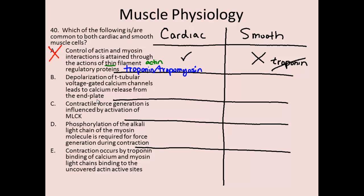Response B states: the depolarization of t-tubular voltage-gated calcium channels leads to calcium release from the end plate. One thing that should automatically stand out is that this is not true of smooth muscle because smooth muscle does not have t-tubules. They have caveolae, which are similar to t-tubules but don't invaginate as fully. Based on terminology alone, this response would not be true of smooth muscle.